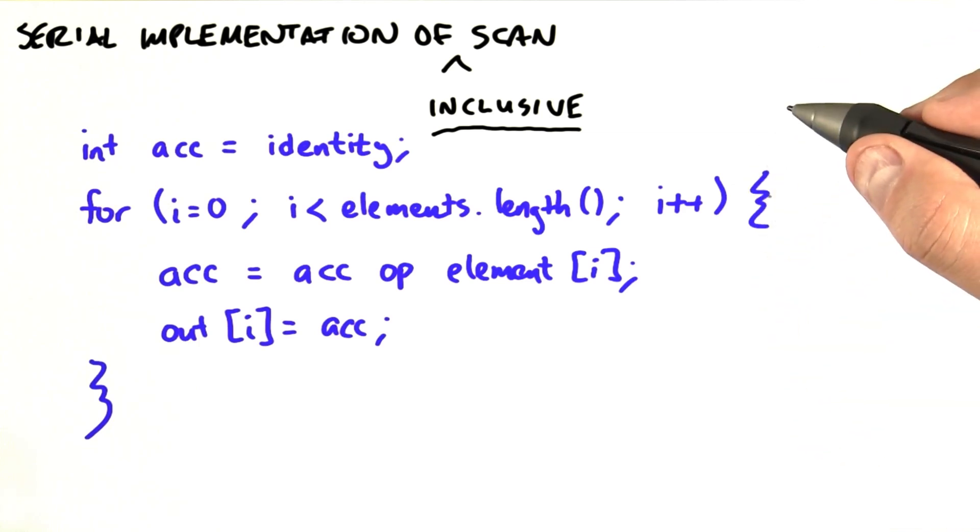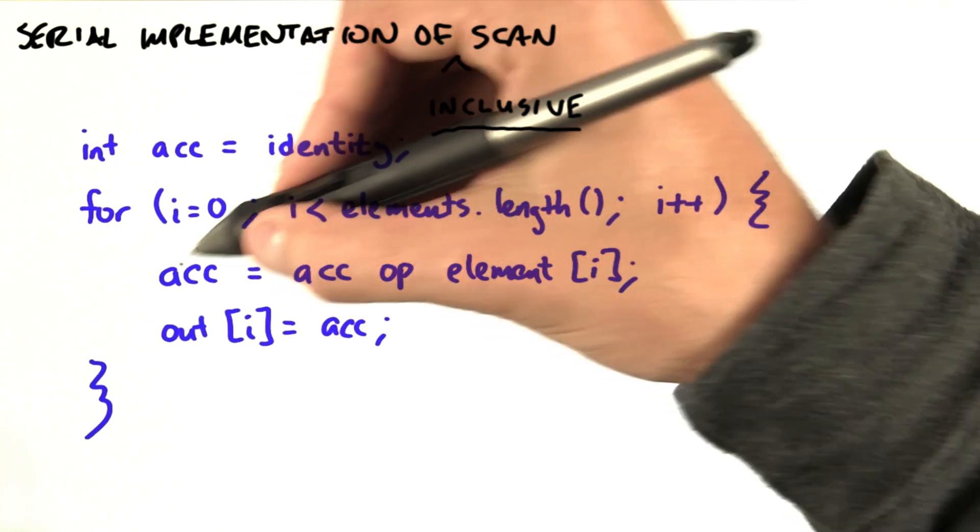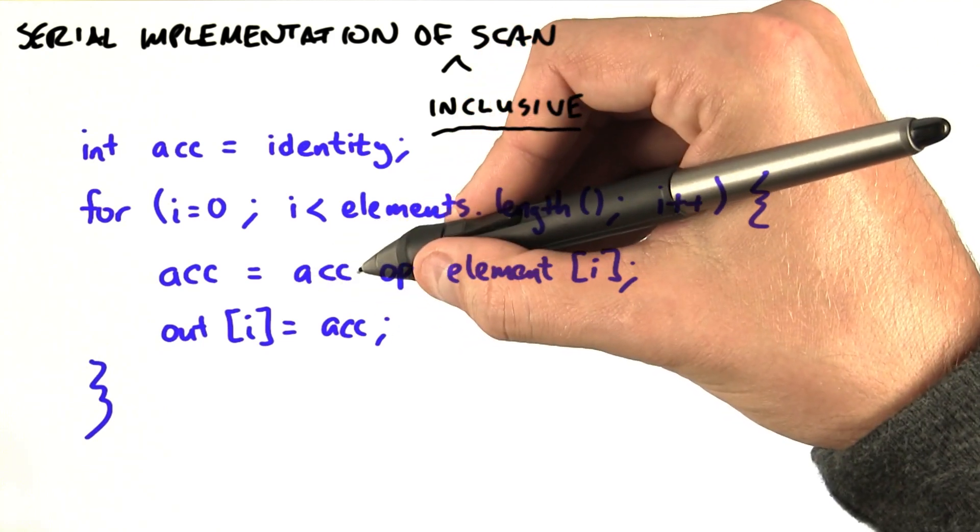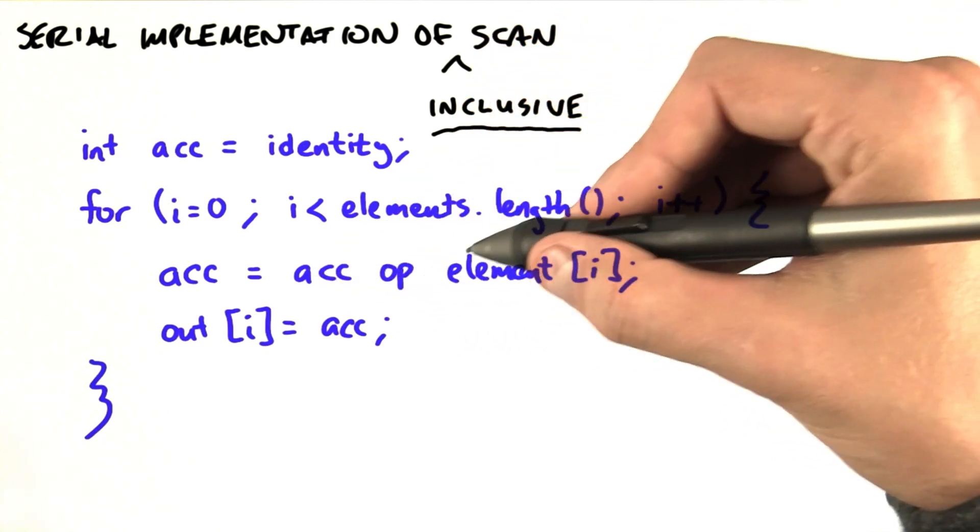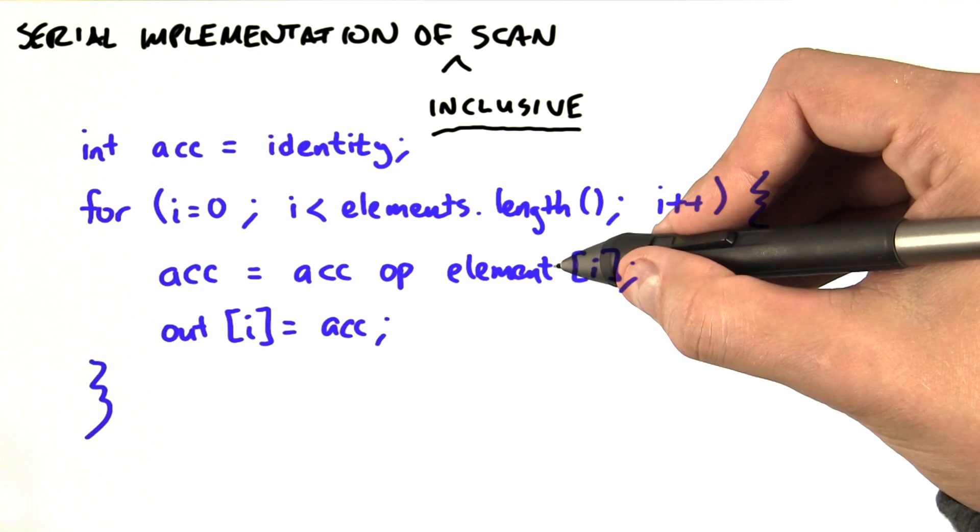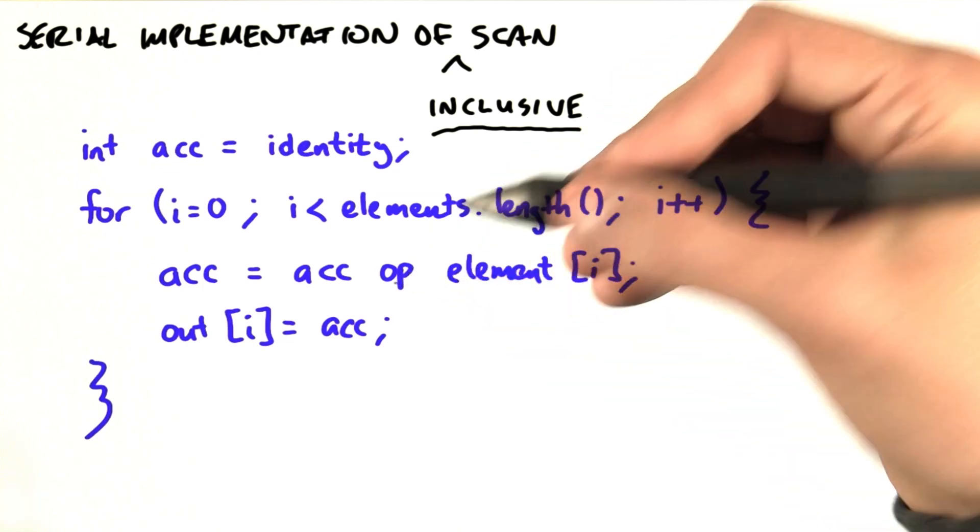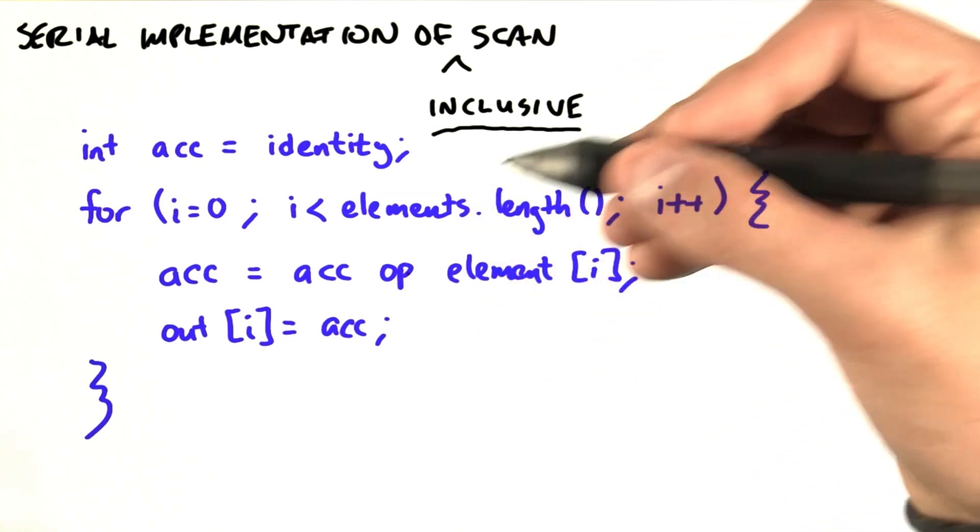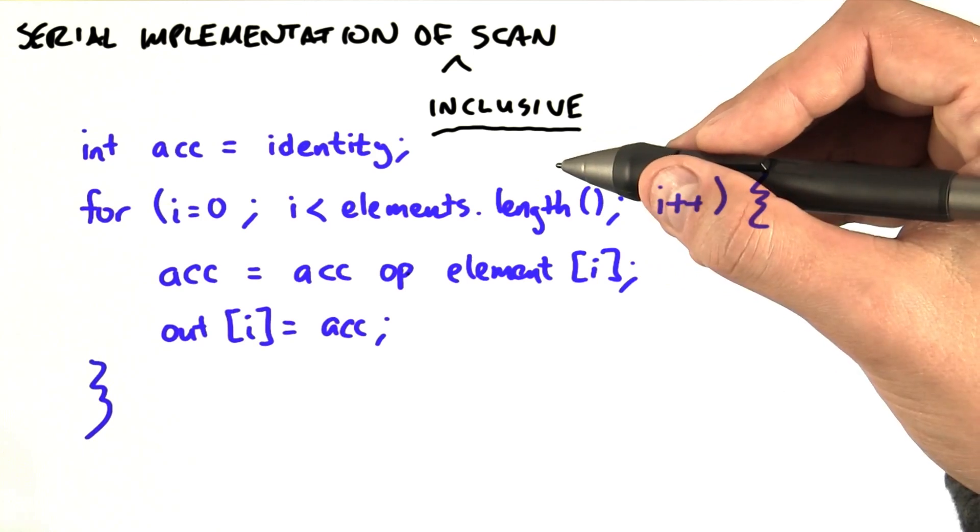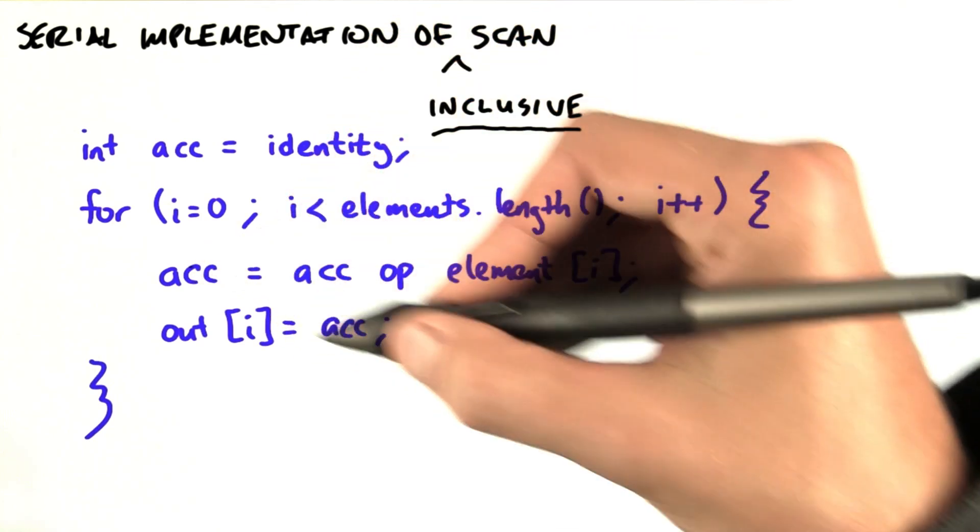So at each step we're going to do two things. The first thing we're going to do is take the current value of the accumulator and apply the operation to it with the current element. This could be any binary associative operator: plus, times, max, min, and so on. And we're going to store that value back in the accumulator.